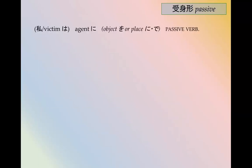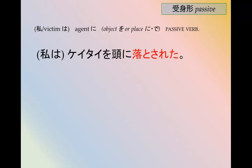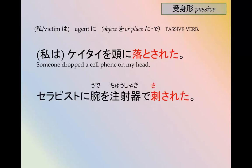Let's do a few more examples and see if you can understand what these are. 携帯を頭に落とされた — 落とす means 'to drop' — someone dropped a cell phone on my head. セラピストに腕を注射器で刺された — I got stabbed in the arm with a syringe by my therapist.